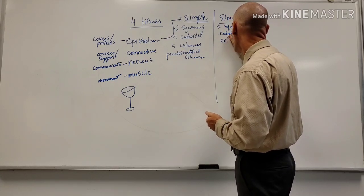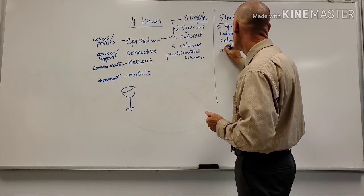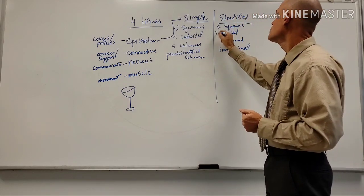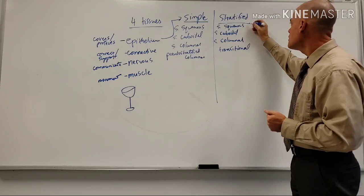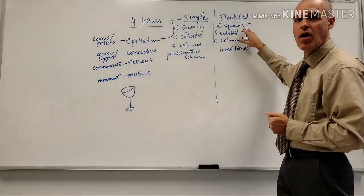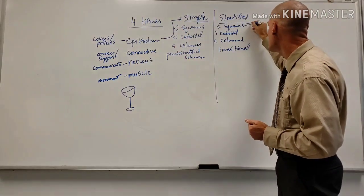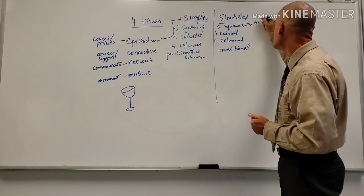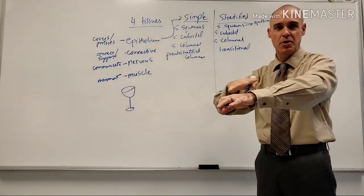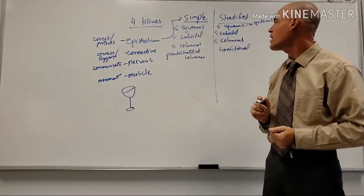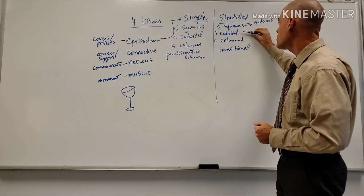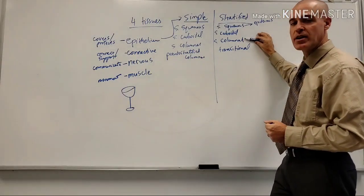On the stratified side, we have stratified squamous, stratified cuboidal, stratified columnar, and the unique one - transitional epithelium. Stratified squamous is probably the most important one to remember; it is the most widespread of all epithelial tissues because it's what the epidermis is made of - the epidermis being your outer layer of skin.